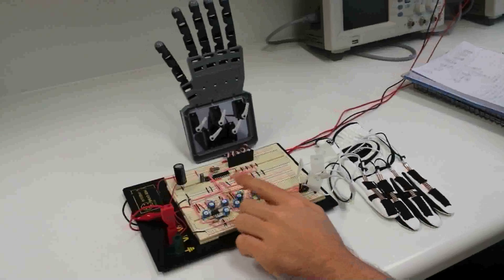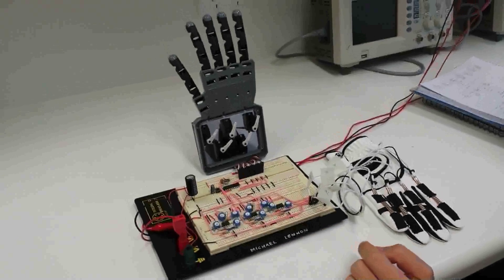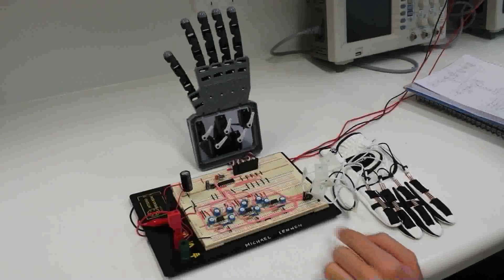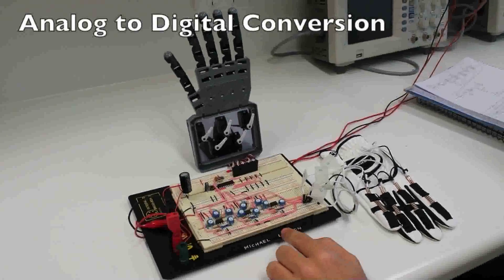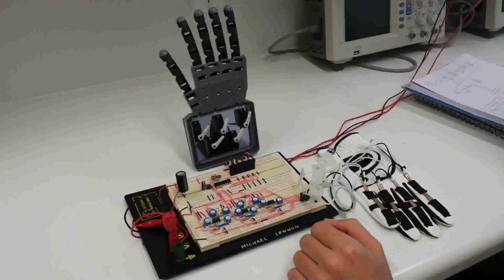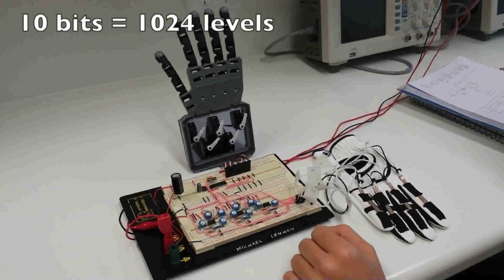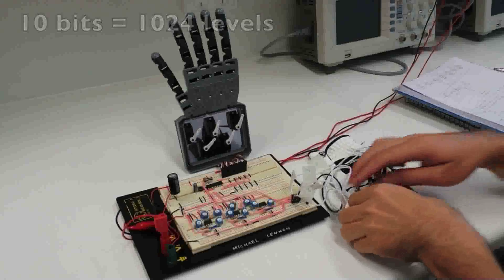The PIC chip receives the analog voltage signal for each finger from the signal conditioning circuit. Using analog to digital conversion, the voltage is converted to a 10-bit digital value that increases as the flex sensor is bent.